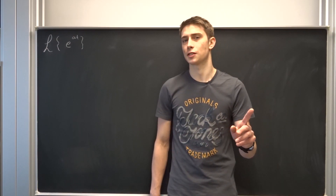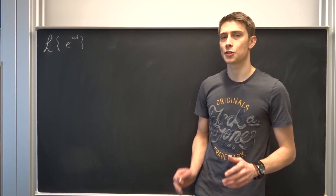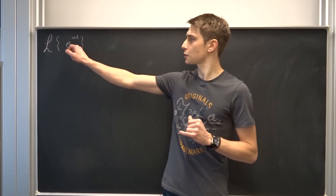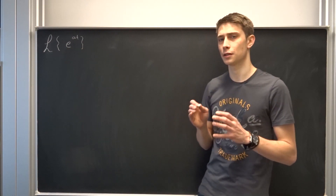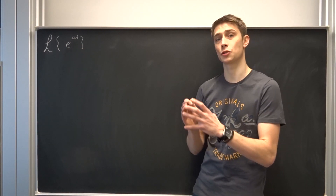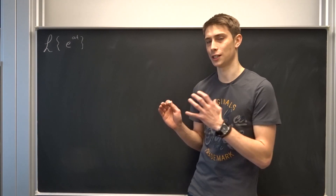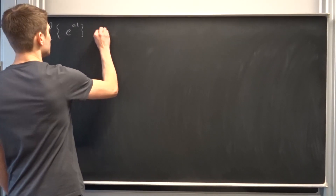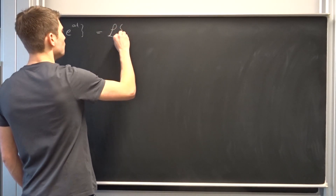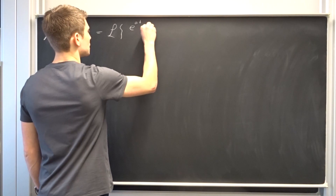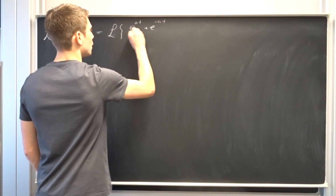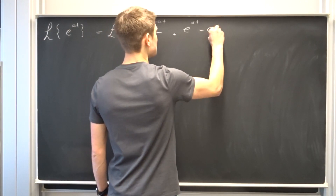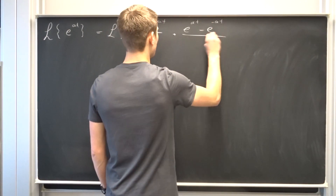We are going to use a small fact — if you don't know what I'm talking about, just take a look in the description. We are going to split the function e^(at) into the sum of an odd and even function. So this is just the Laplace transform of e^(at) + e^(-at) over 2, plus e^(at) - e^(-at) over 2.